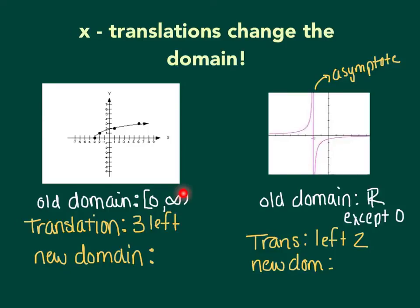This will make the new domain negative 3 to infinity. So notice that an x translation changes the domain, which makes sense because the domain has to do with valid x values. So left 3, like a negative 3, makes the start of the domain negative 3.